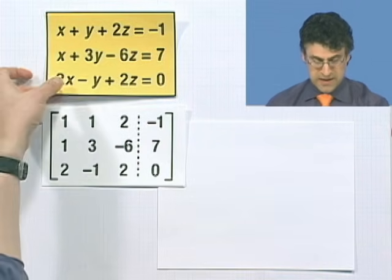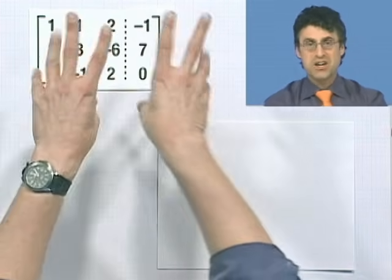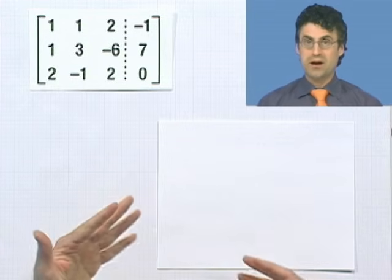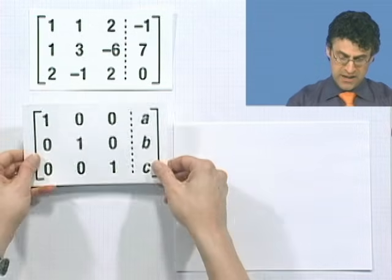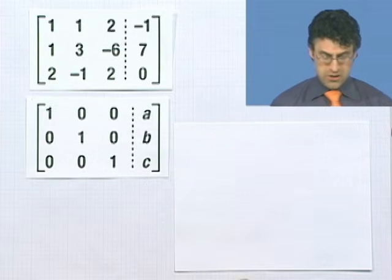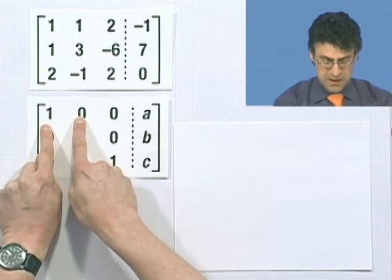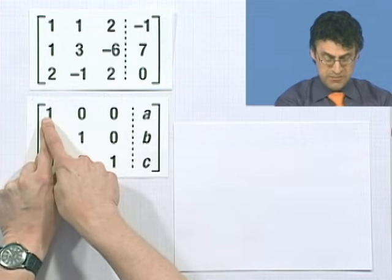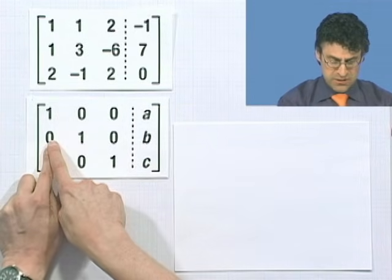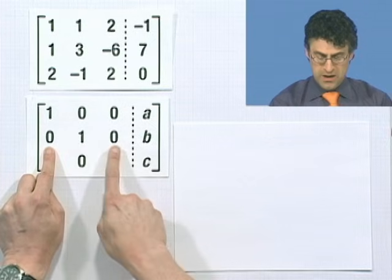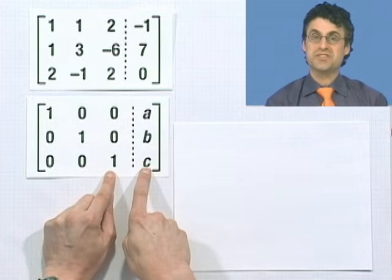What's our goal? Our goal is to massage this matrix using the method of Gauss-Jordan and convert it into an equivalent matrix. This tells me that 1 times x plus 0 times y plus 0 times z equals a, so x equals a. Similarly, y equals b and z equals c.